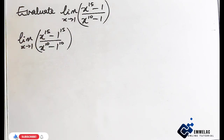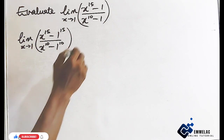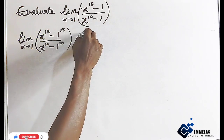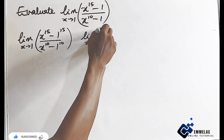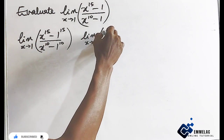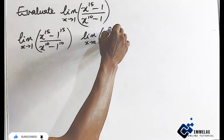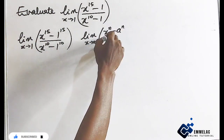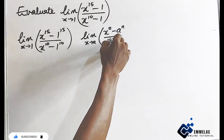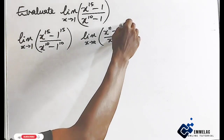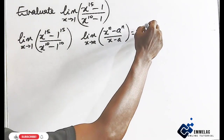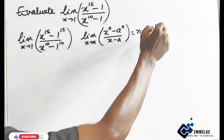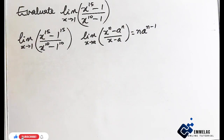Now we are going to use this theorem: x raised to the power of n minus a raised to the power of n, all over x minus a, will give us n times a raised to the power of n minus 1.